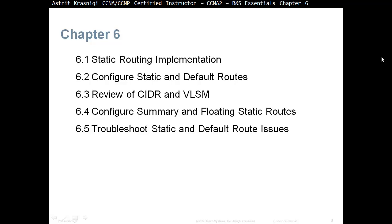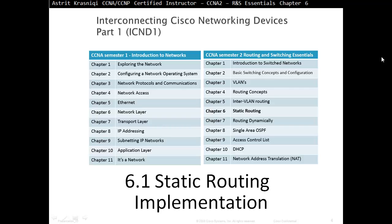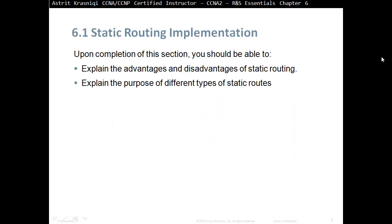Chapter 6 is divided into five sections: Section 6.1 Static Routing Implementation, Section 6.2 Configure Static and Default Routes, Section 6.3 Classless Inter-Domain Routing and Variable Length Subnet Masks, Section 6.4 Configure Summary and Floating Static Routes, and Section 6.5 Troubleshoot Static and Default Route Issues.